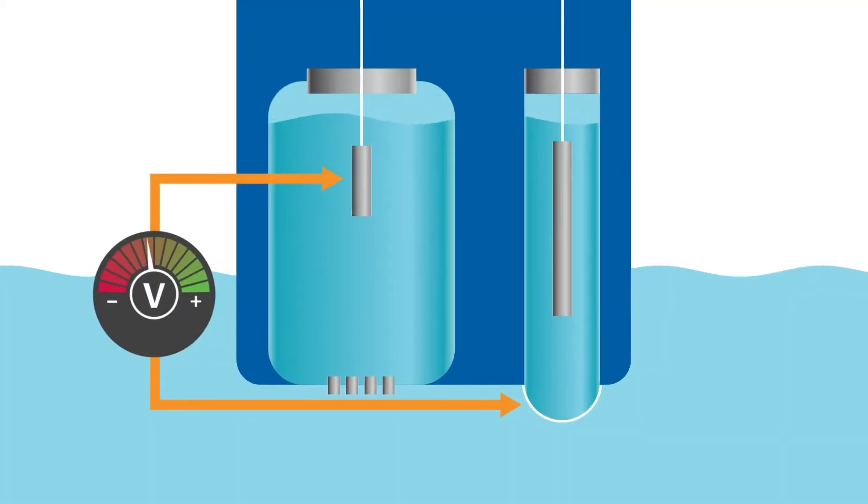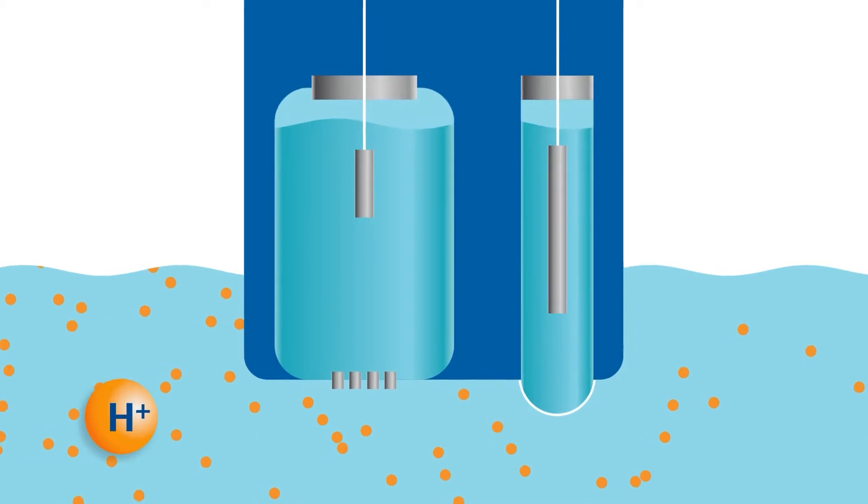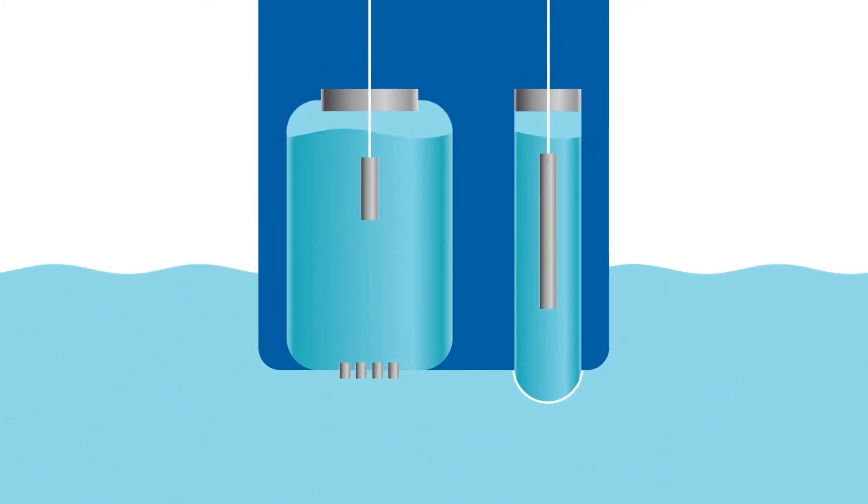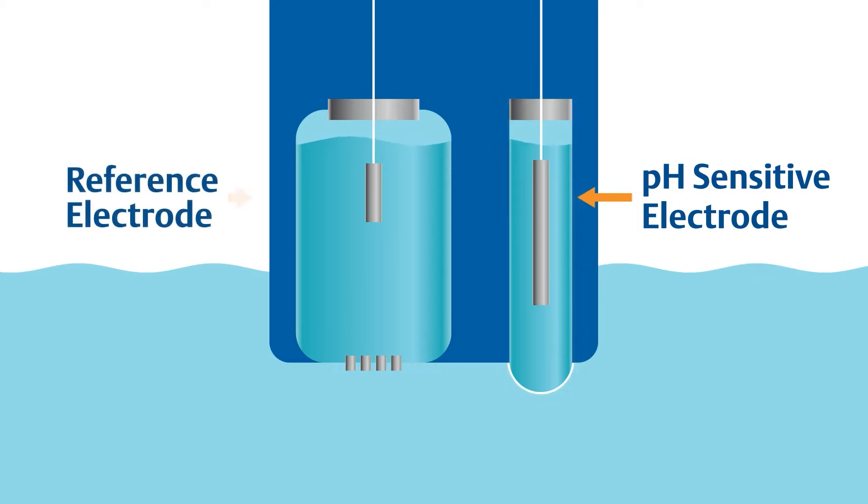These sensors work by producing an electrical voltage that is proportional to the hydrogen ion concentration in the fluid. pH sensors have two primary components: a pH sensitive electrode and a reference electrode.